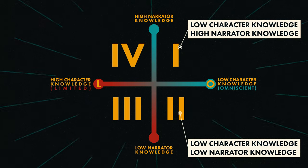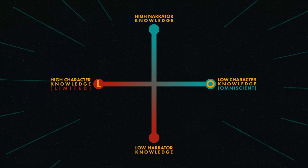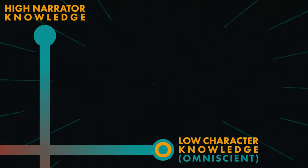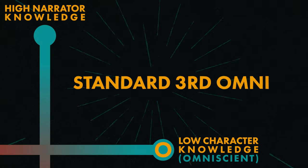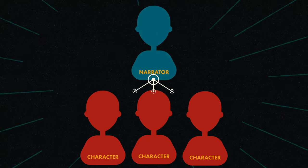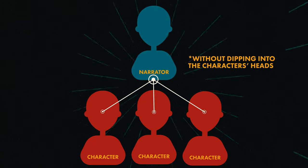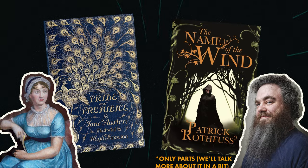That graph is great for exploring all the different directions you can take your story in, so let's dive in. The top-right corner is the land of low character connection and high narrator knowledge. This is historically where most third-person omniscient stories find themselves. The narrator moves from character to character as they please and knows as much as you want them to. This is where you'd find stories like Pride and Prejudice, or the present-tense parts of The Name of the Wind.